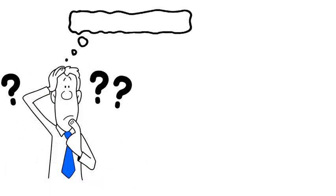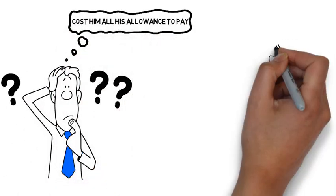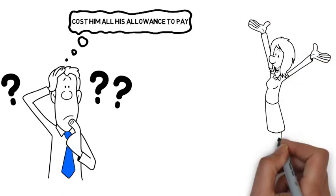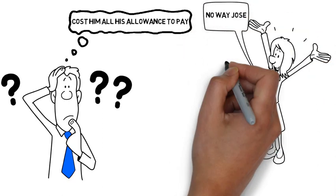Bob is sad. He thinks this will cost him all his allowance to pay to get his credit fixed. Jen shakes her head and smiles. No way Jose.